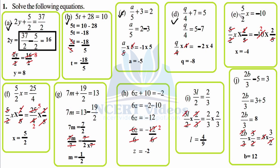Part e: 5 over 2 times x equals minus 10. We need to get rid of 5 over 2, so we multiply the left-hand side with 2 by 5 — its reciprocal — and do the same on the right-hand side to balance the equation. 5 over 2 times 2 over 5: 2 cancels, 5 cancels, x is separated. 2 over 5 of minus 10 gives minus 4, so x equals minus 4.